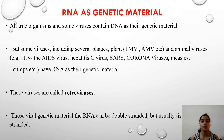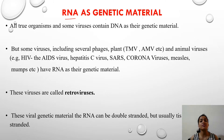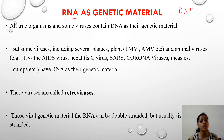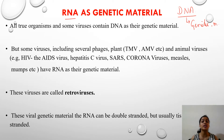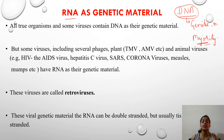Today's topic is all about when RNA is acting as a genetic material. In the previous videos we have seen various experiments — the Hershey-Chase experiment, the proof given by Miescher, and the Griffith experiment — which actually proved that DNA, that is deoxyribonucleic acid, acts as the genetic material in many organisms.